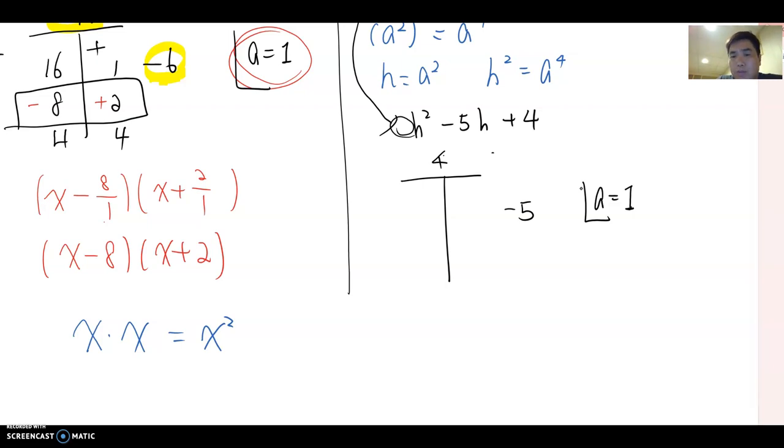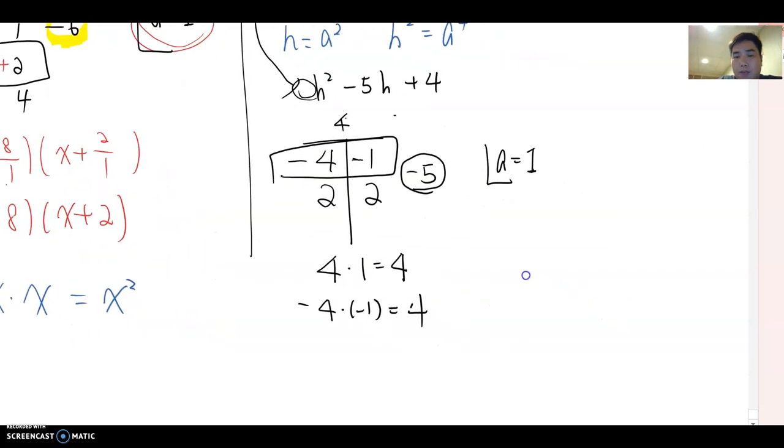Now we break 4, then it becomes 4 times 1. And that's it. But when you look at this number, it becomes negative 5, which means both numbers must be negative. Because two factors multiply to become 4. Actually, I forgot 2 and 2 here. But 4 times 1 becomes 4, and negative 4 times negative 1 also becomes 4. So in this case, these two factors must be both negative sign.